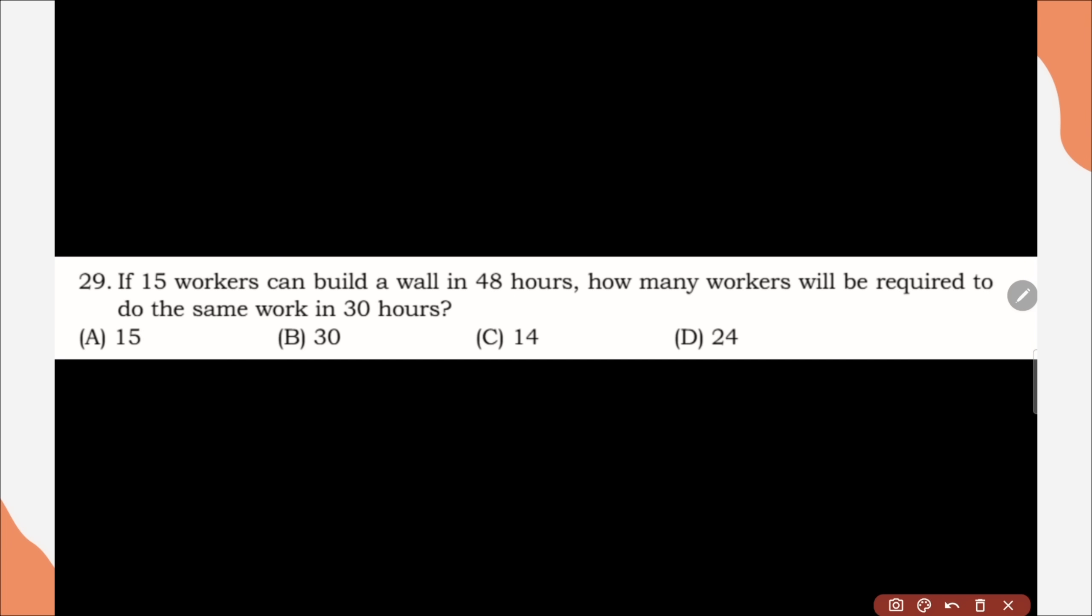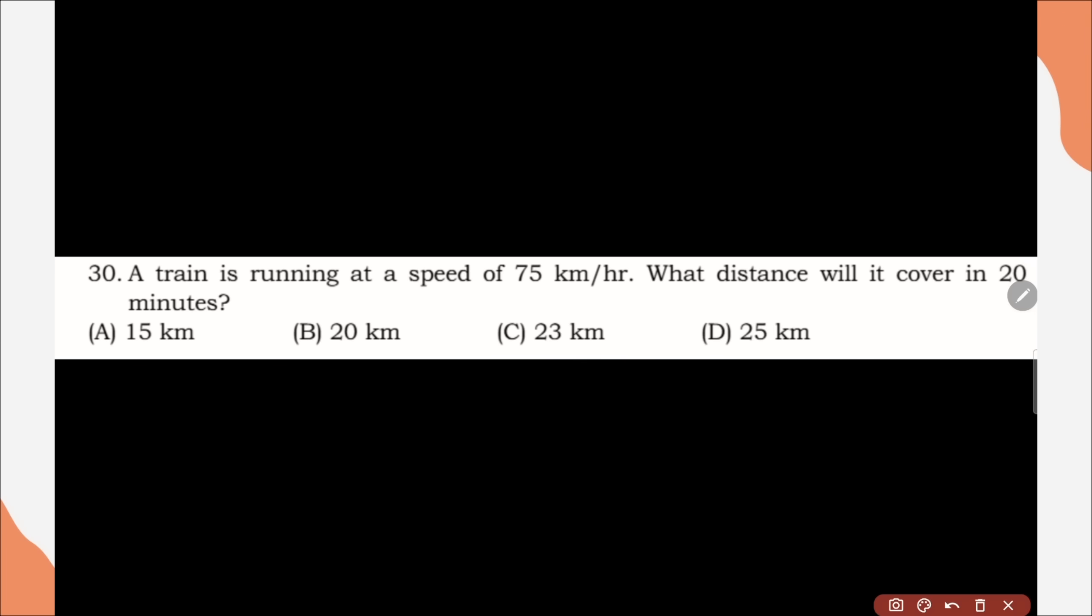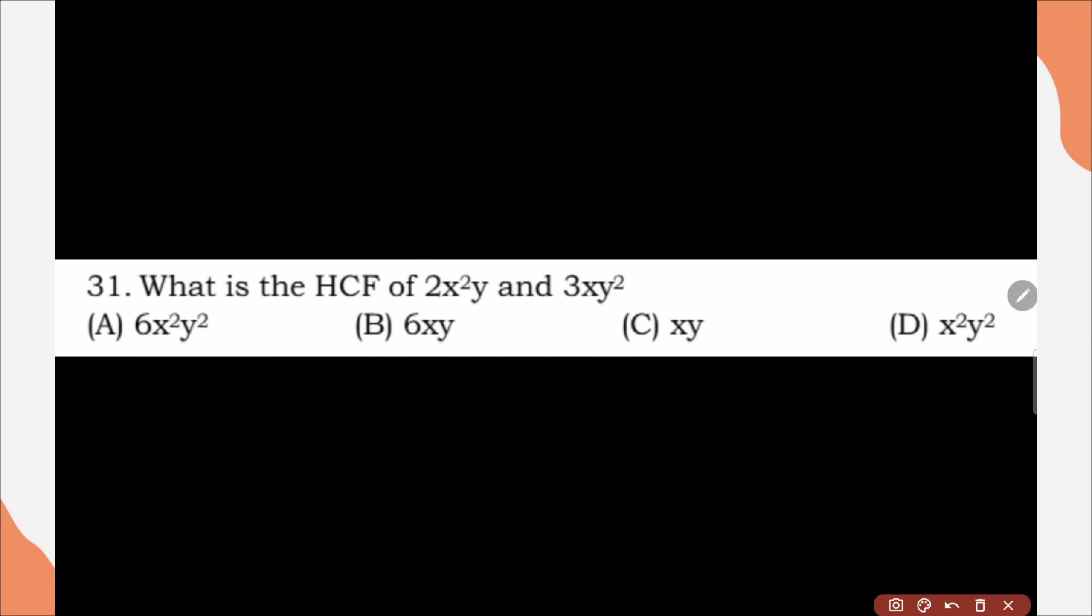Question number 29, if 15 worker can build a wall in 48 hours, how many worker will be required to do the same work in 30 hours? Correct option is option D, 24 workers. Question number 30, a train is running at a speed of 75 km per hour. What distance will it cover in 20 minutes? Correct option is option D, 25 km. Question number 31, what is the HCF of 2x square y and 3xy square? Correct option is option C, xy.